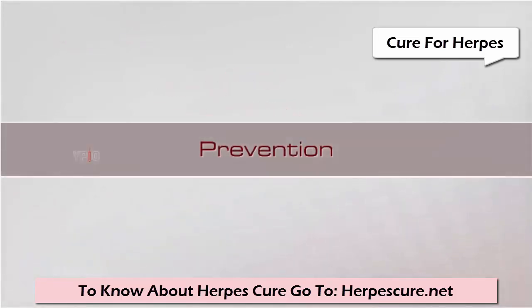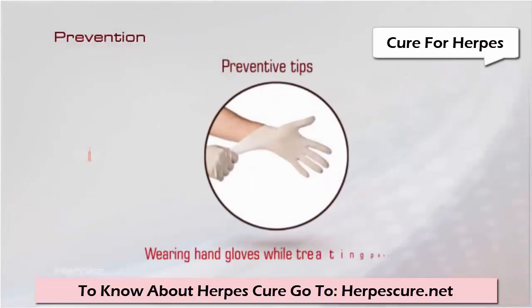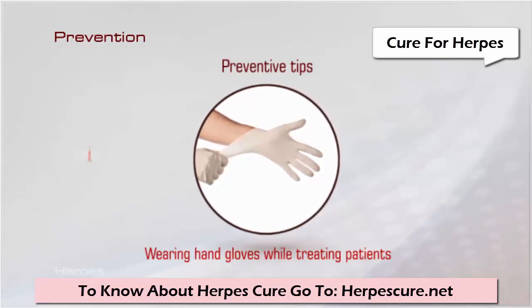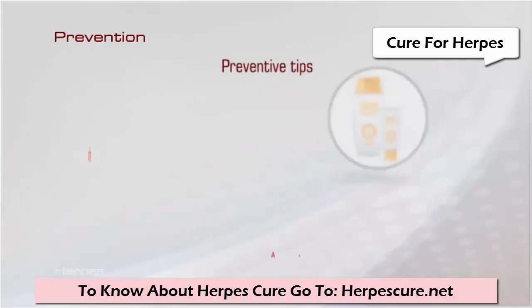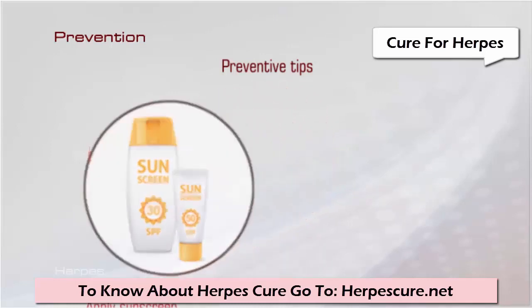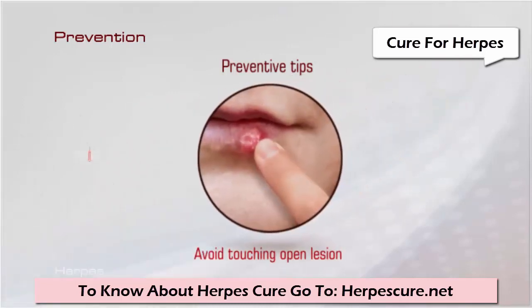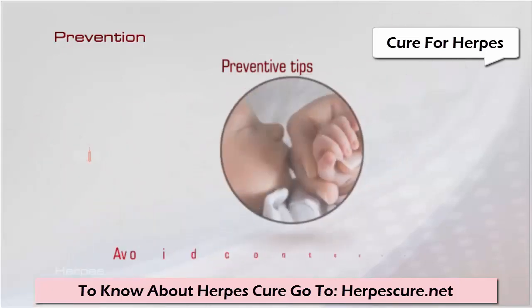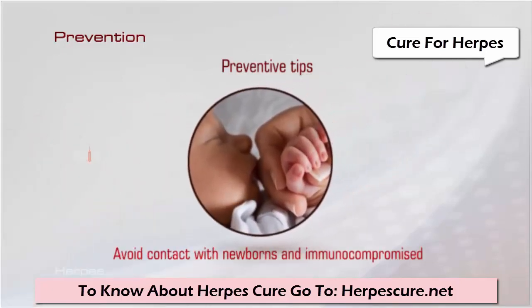Precautionary measures to help prevent herpes include: healthcare personnel, both medical and dental, should always wear protective hand gloves while treating patients to prevent herpetic whitlow. Use sunscreen creams to prevent recurrent infection of oral herpes. Avoid contact with an open herpetic lesion. Avoid contact with newborns, children with eczema, and immunocompromised people if you have an active lesion.